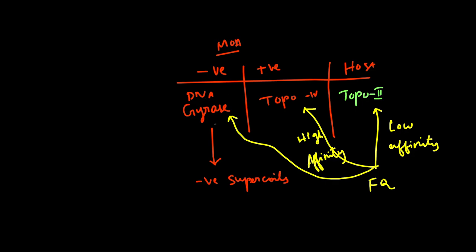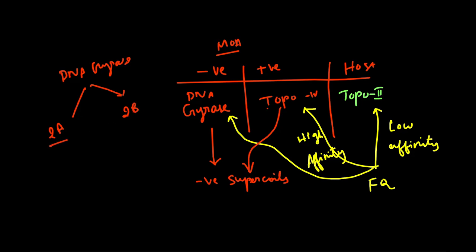Fluoroquinolones also bind to and inhibit the DNA Gyrase enzyme, so there is no formation of negative supercoils. Topo-4 is also responsible for introduction of negative supercoils. DNA Gyrase consists of two subunits: one A subunit and one B subunit — specifically two A subunits and two B subunits. Fluoroquinolones bind with the A subunit.